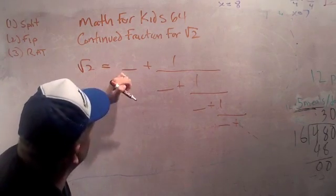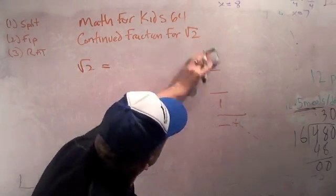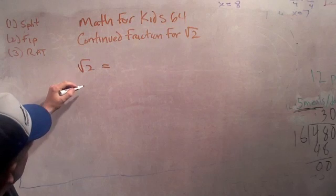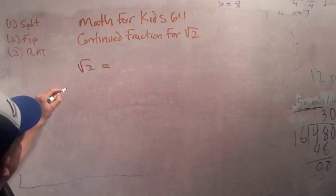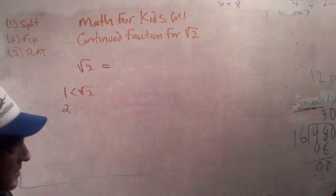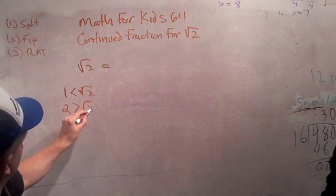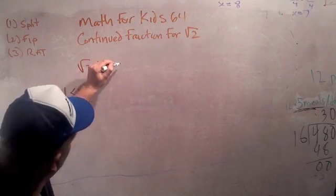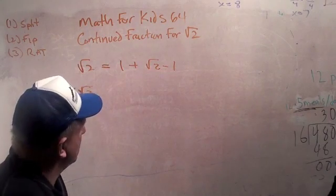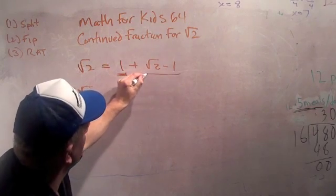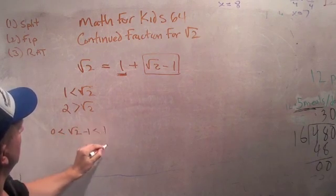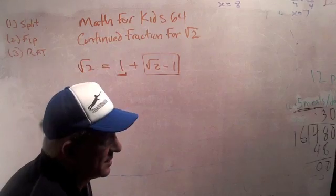First we want to split the square root of 2 into an integer and a non-integer. What's the integer that's less than the square root of 2? It's 1 — because 1 is less than the square root of 2, and 2 is greater than the square root of 2. So we can write the square root of 2 as 1 plus the square root of 2 minus 1. This is an integer, and the square root of 2 minus 1 is a number that's between 0 and 1.